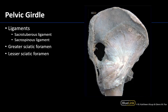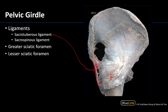Keep the ischial spine and ischial tuberosity in mind as these are important attachment sites for two of the most prominent ligaments of the pelvis. The sacrotuberous ligament attaches from the sacrum and coccyx down to the ischial tuberosity. The sacrospinous ligament attaches from the sacrum and coccyx to the ischial spine. The sacrotuberous ligament is a bit more posteriorly placed and longer, and when looking at a straight posterior view it often occludes the view of the sacrospinous ligament.